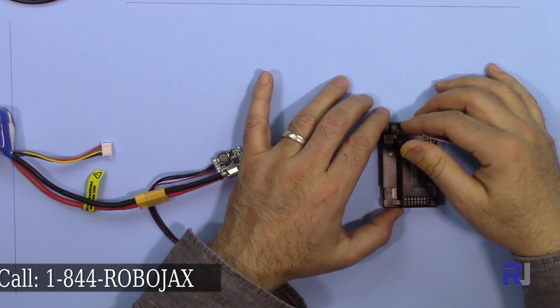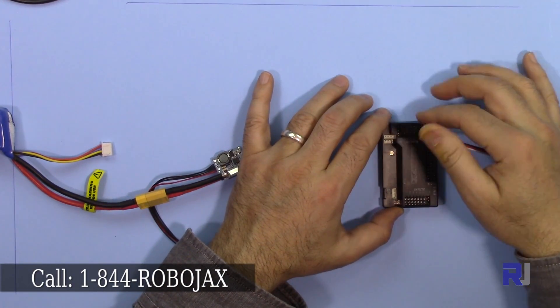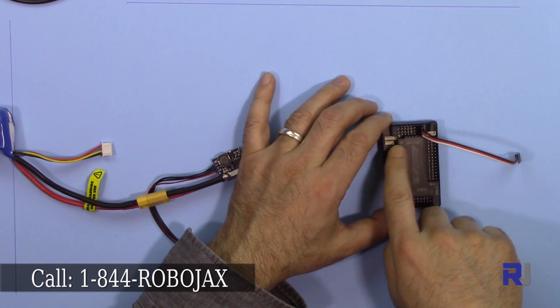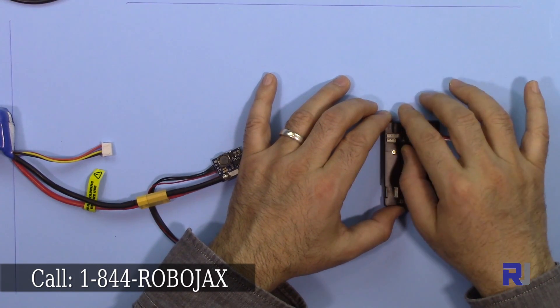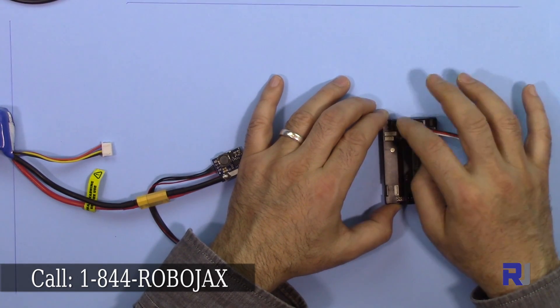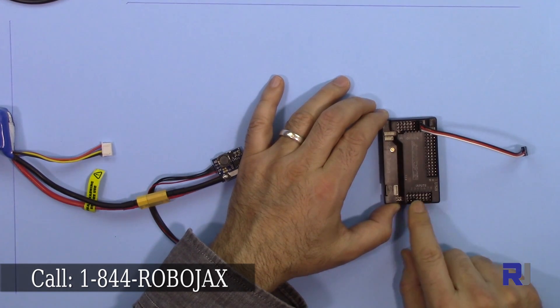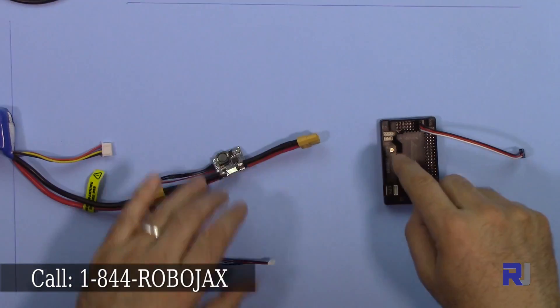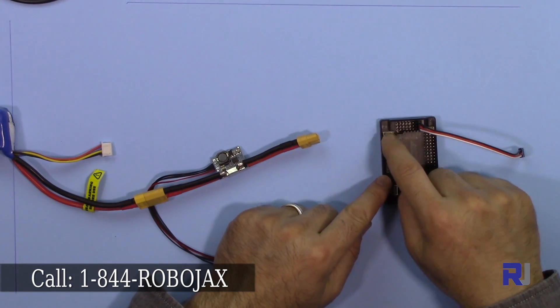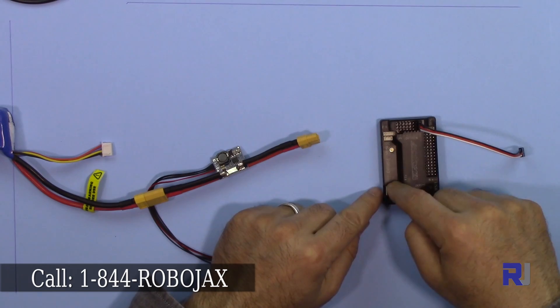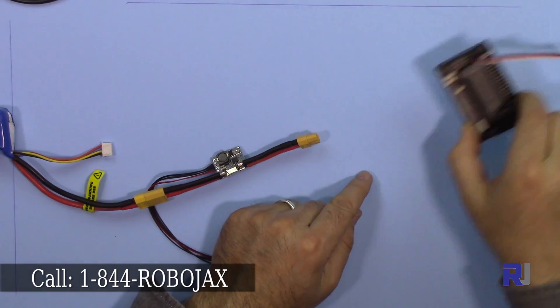Depending on your quad or hex, we can have up to eight connections here. If you have octocopters you can also connect it. Your receiver will be connected here, all the channels from your receiver. We also have GPS and telemetry connections here. All the ports are connected here.